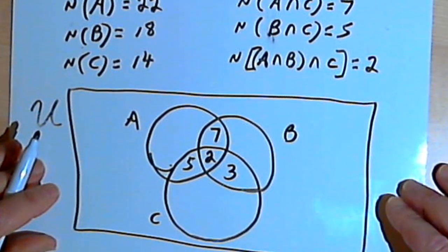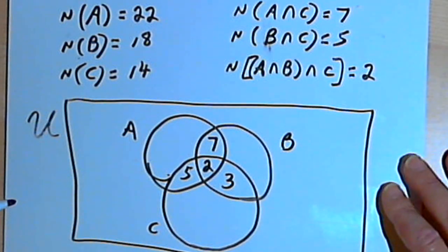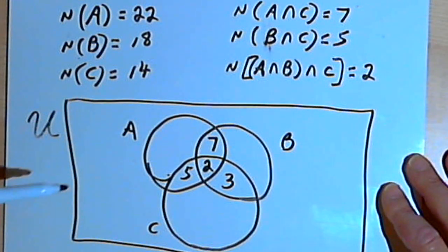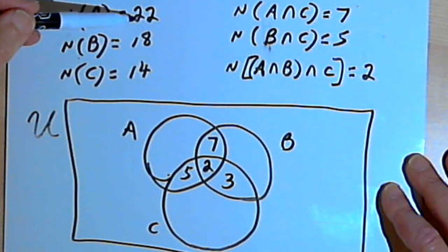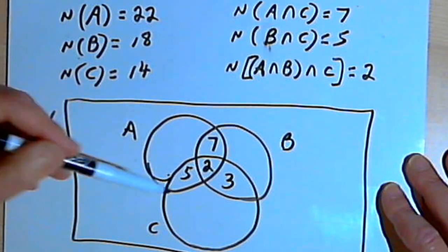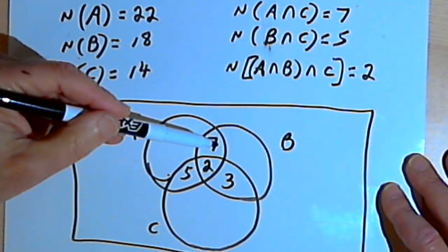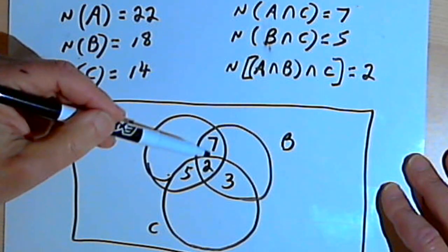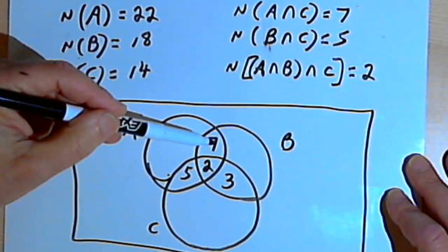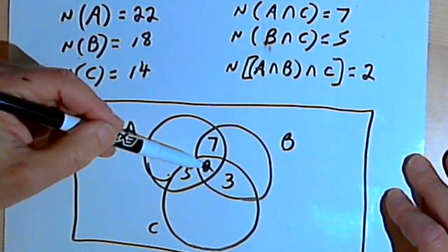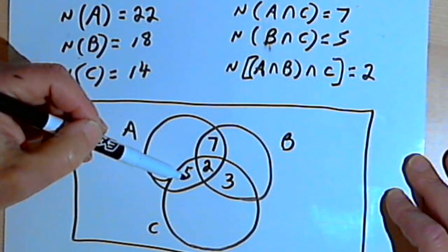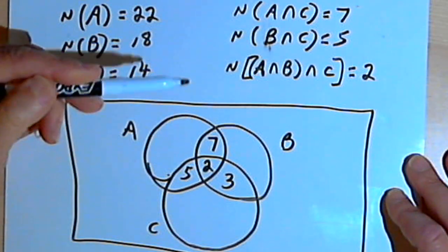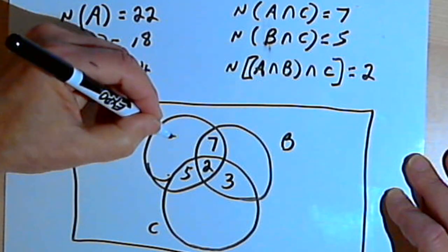Now I can find out how many students are taking only algebra. There's a total of 22 students taking algebra, and I want to subtract the ones already accounted for: 7 plus 2 is 9, plus 5 is 14. And 22 minus 14 gives me 8.